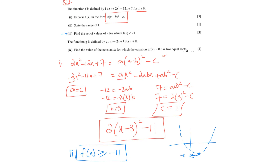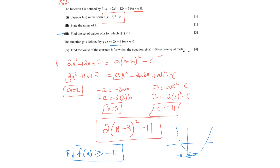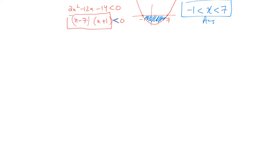In the last part, function g is given as 2x plus k, defined for all real values x. Find the value of constant k for which g(f(x)) has two equal roots. g(f(x)) is a composite function in which f is inserted into g. So g(f(x)) means substituting f(x) into g, replacing x with the entire function 2x² minus 12x plus 7.